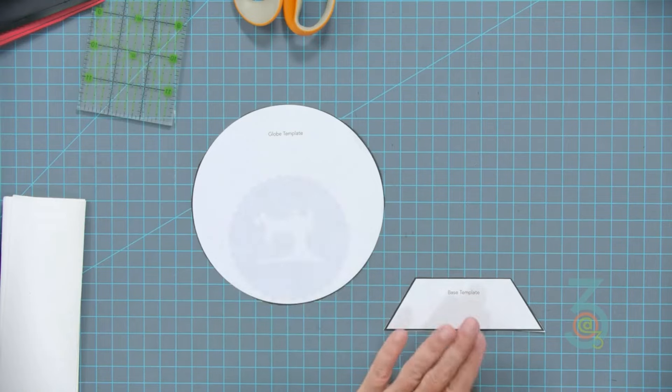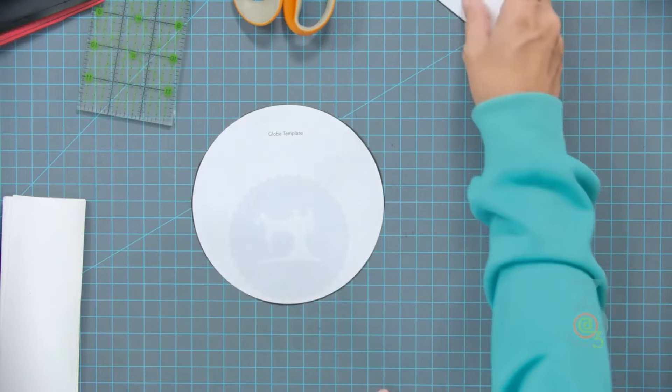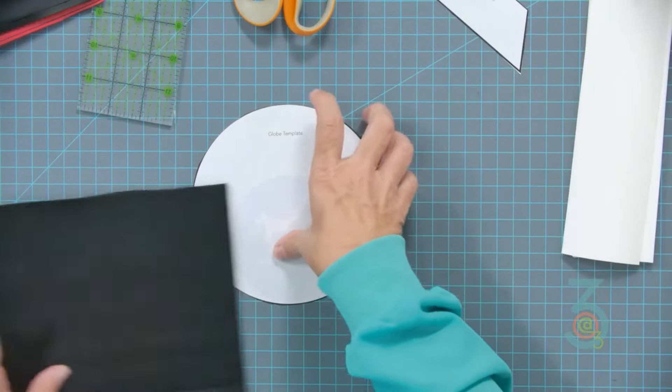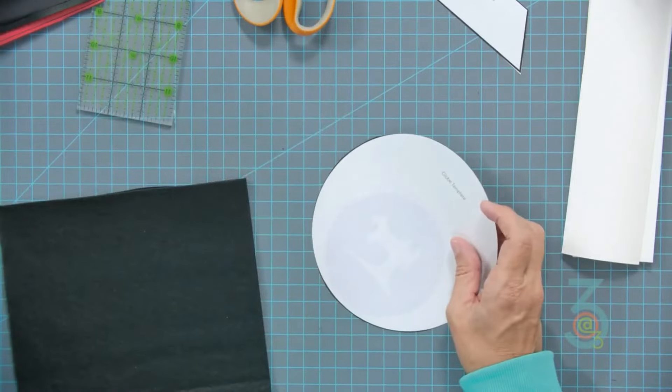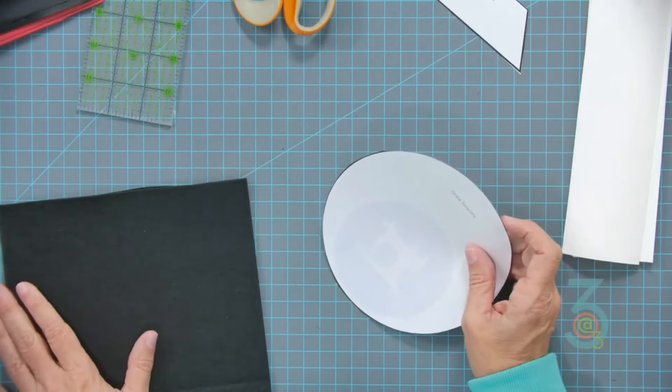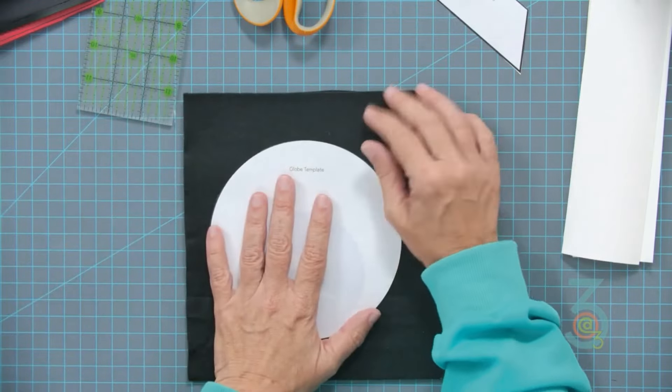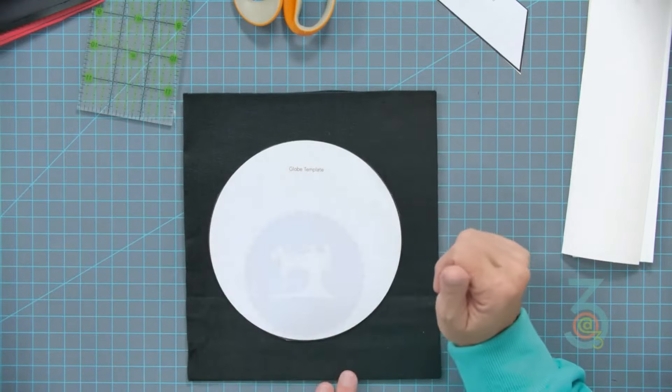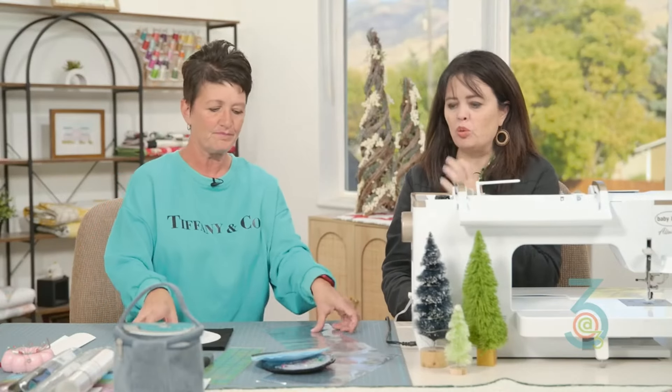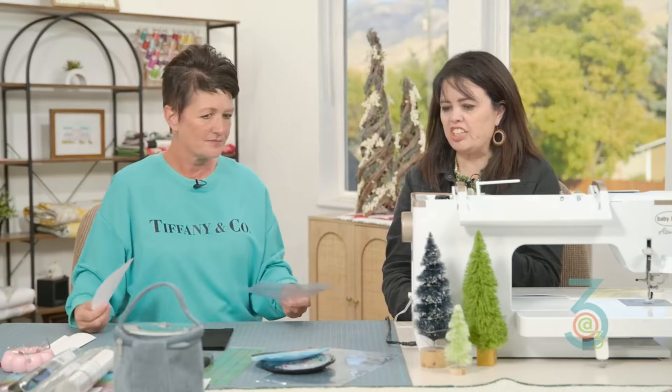With your globe template, we are going to take two pieces of felt. It just gives it a little bit of stability. Then the second thing is I have a piece of the Kimberbell vinyl.